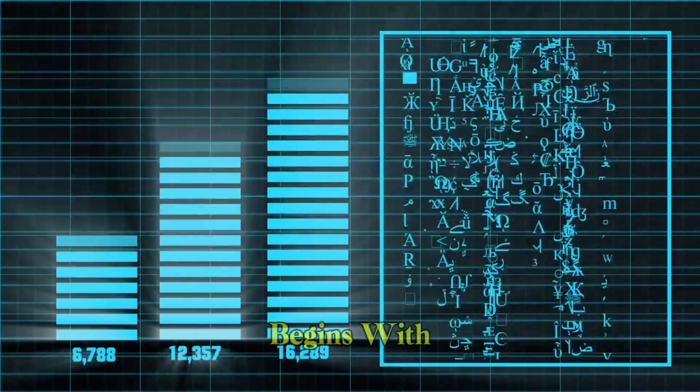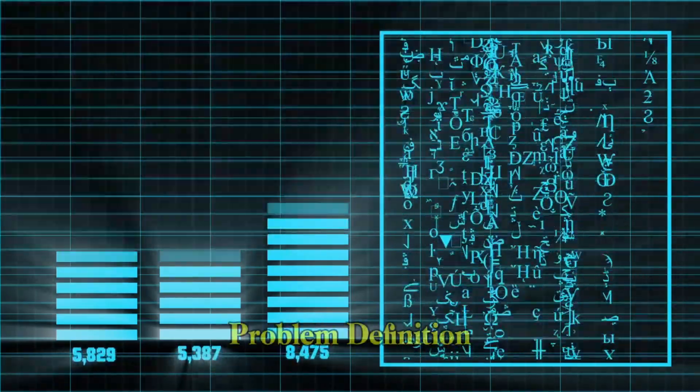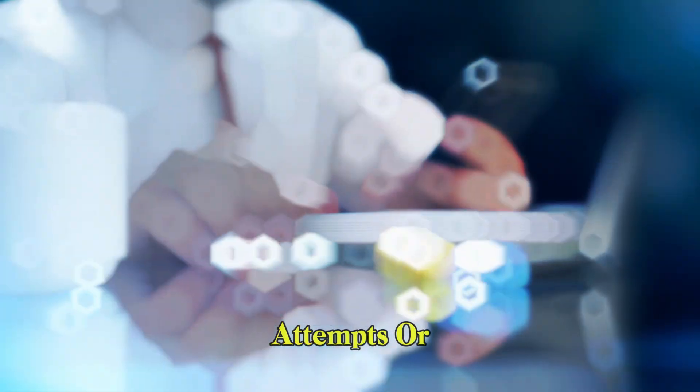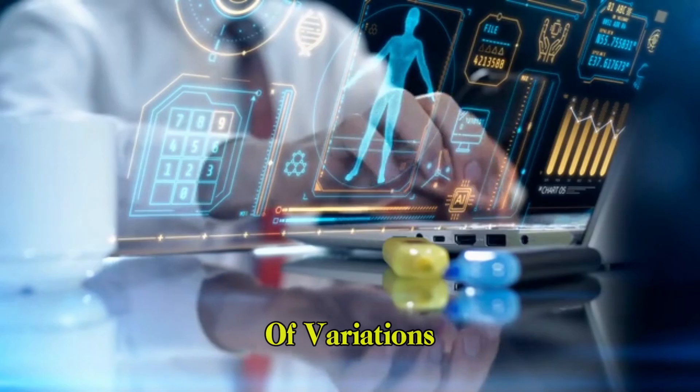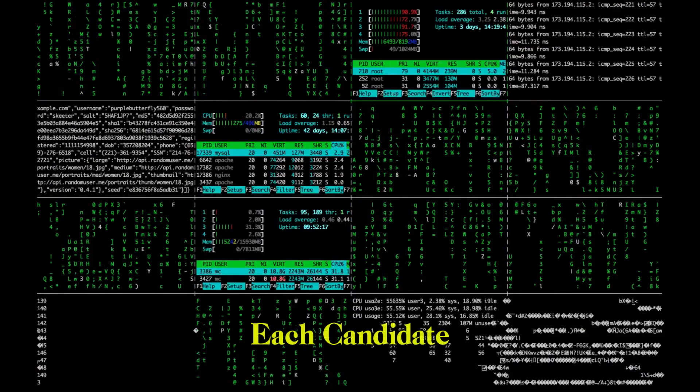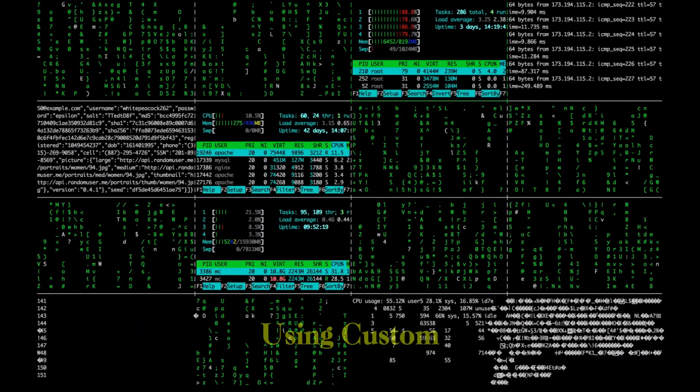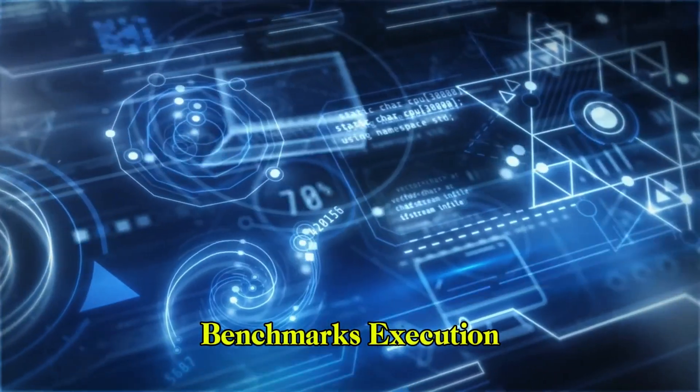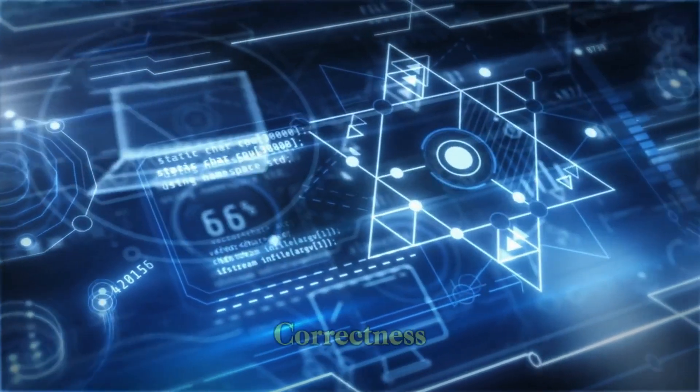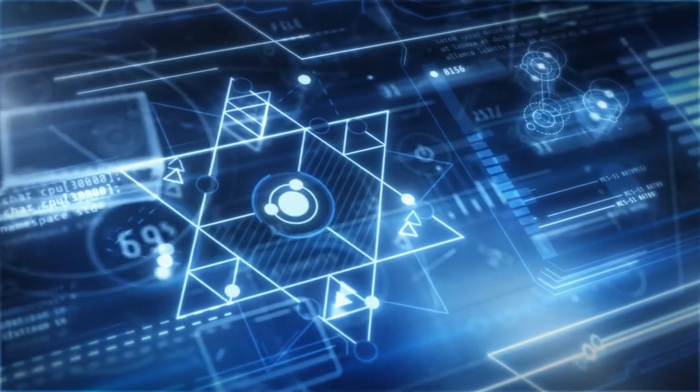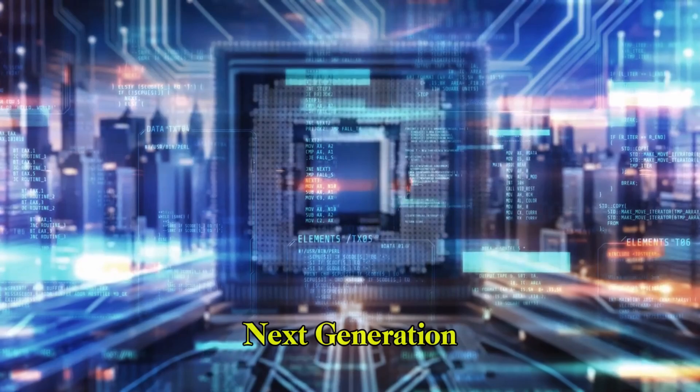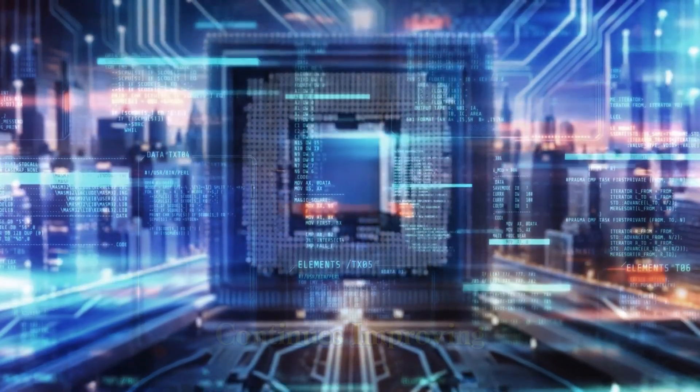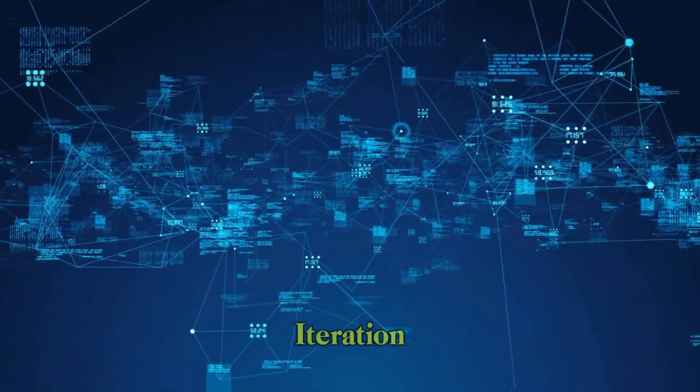The process begins with a prompt. This could include the problem definition, previous failed attempts, or hints. Flash then generates thousands of variations. Each candidate is automatically evaluated using custom benchmarks: execution speed, memory usage, correctness, and more. Top-performing candidates—typically the top 1%—are used as parents for the next generation. This cycle continues, improving with each iteration.